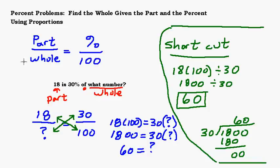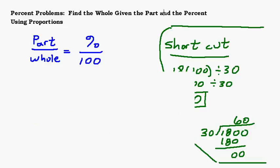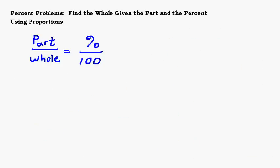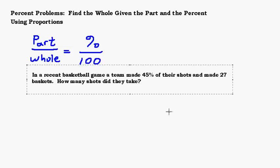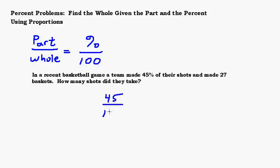Let's try another one. We're going to do all these using proportions. In a recent basketball game, a team made 45% of their shots and made 27 baskets. How many shots did they take? We have our percent, which is 45 out of 100. If they made 45% of shots, they would make 45 out of 100. That's what percent means, per hundred. We want to set that equal to the part out of the whole. They made 27 baskets out of how many? We don't know the whole number of shots they took.